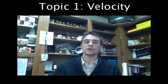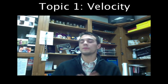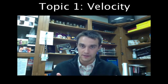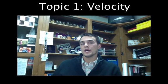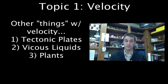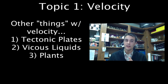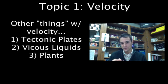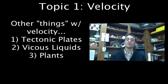Velocity and speed are terms we associate with other things as well, not just fast objects. For instance, the movement of tectonic plates is very, very slow but still has a velocity. The flow of viscous liquids — the more viscous a liquid is, the more resistance to flow it displays — also has a velocity. We can even use the term velocity when talking about the growing of plant species.